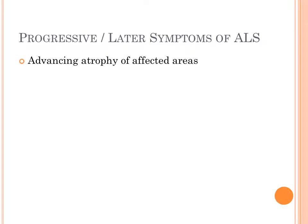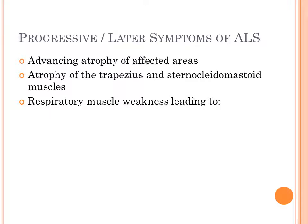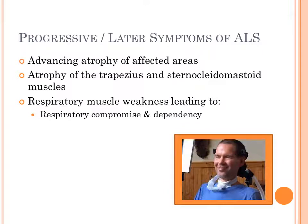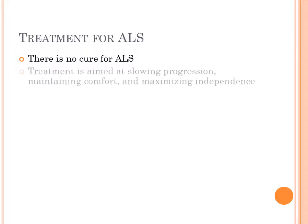Muscles of the eyes and bladder are generally not affected — you don't necessarily see incontinence. Later symptoms of ALS include advancing atrophy of the affected areas, advancing atrophy of the thoracic muscles, the trapezius, and sternocleidomastoid muscles. You can imagine this is getting closer to having trouble with breathing, and that's where a lot of our intervention will be focused. Respiratory muscle weakness leads to respiratory compromise, where you may need nighttime support and then eventual dependency — possibly tracheostomy and ventilation. This respiratory involvement may result in pneumonia or overwhelming infection.